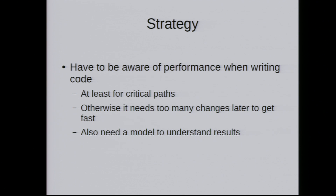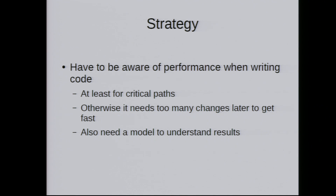There are some cases where it's pretty simple — like in high-performance computing, you usually have some loops that are really hot and you can optimize them. But if you have really complex code, you often end up with flat performance profiles. The strategy is really to be somewhat aware of performance when writing the code — both at the small level and the high level — at least for the critical paths. Because if you completely ignore it, you often need too many changes to get it fast.